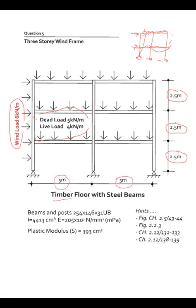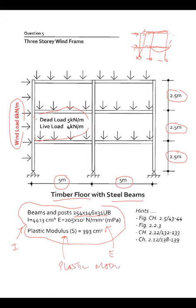It's 5m spans and 2.5m story height, timber floor with steel beams. We're given the beam size with the parameters, the I value and the E value for steel. The I value and the plastic modulus is introduced, which is given in the problem.